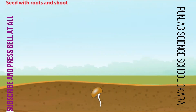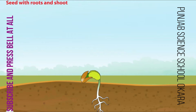With the right amount of water and nutrients, the seed starts to grow roots and shoots. The roots start spreading into the ground so that the plant can't be easily moved. At the same time, the shoot breaks through the surface of the earth.